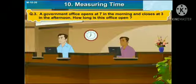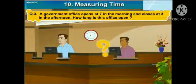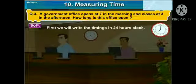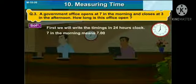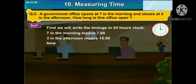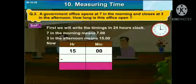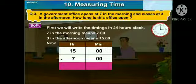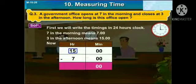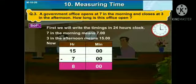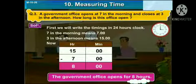Third question: a government office opens at 7 in the morning and closes at 3 in the afternoon. How long is this office open? Let us see the solution. First we will write the timing in 24-hour clock. 7 in the morning means 7 o'clock. 3 in the afternoon means 15. In the hour and minutes column, write down 15 hours and 0 minutes, then 7 hours and 0 minutes. Subtract: 0 minus 0 is 0, and 15 minus 7 is 8. So the answer is 8 hours. The government office is open for 8 hours.